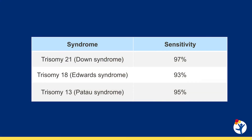This information is reported as a screen positive or a screen negative for the condition it tests for. The ability of the screen to detect certain aneuploidies varies depending on the condition. A 2018 meta-analysis stated that the detection rate was 97% for trisomy 21, 93% for trisomy 18, and 95% for trisomy 13. Individual labs may present slightly different numbers based on information collected from their own internalized data.